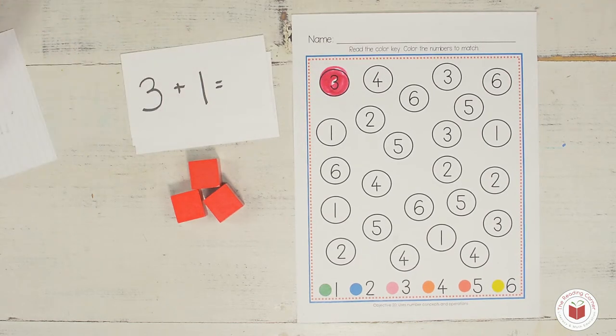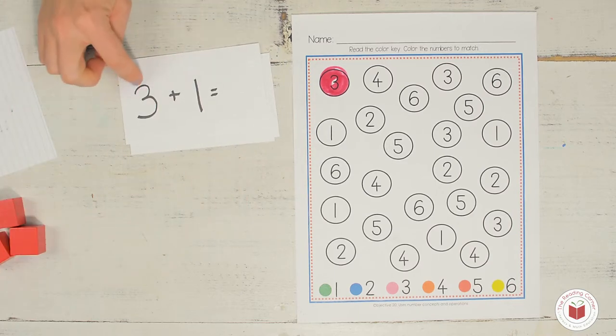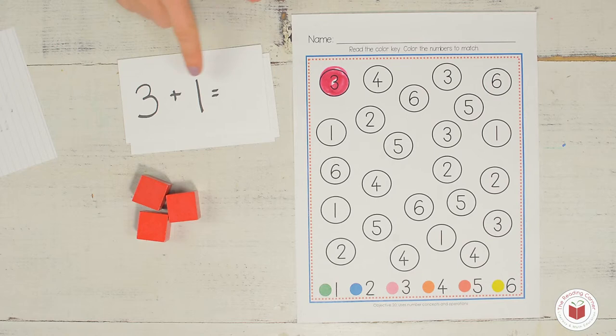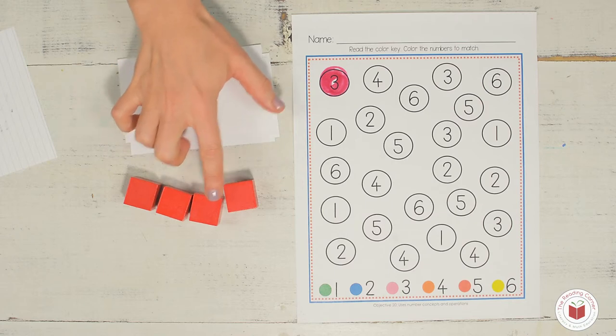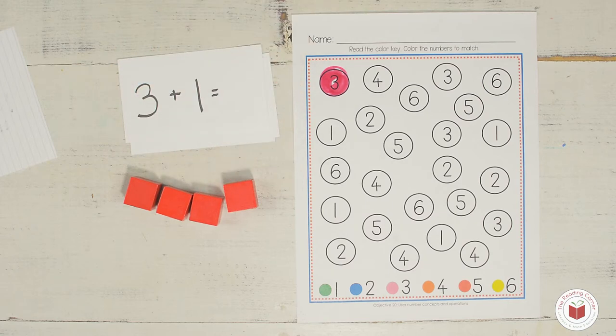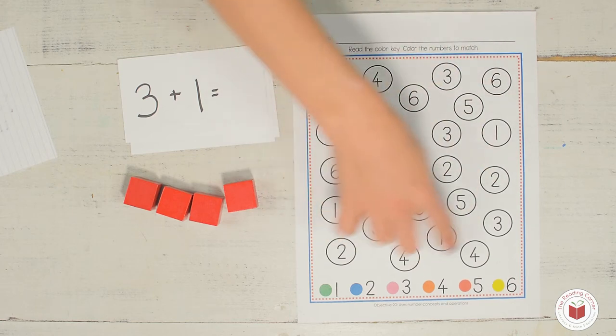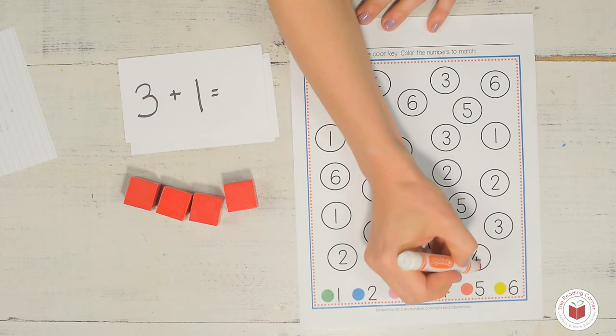I'm going to do one more for you. Three plus one. How many blocks do I need for the first number? That's right, three. How many blocks do I need for the second number? One. Can you count those for me? One, two, three, four. Here's the tricky part. What number do I need to find down there? The four. And what color do I need to color one of the fours on my mat? Orange. Let's see which one. I think I'll color this one.